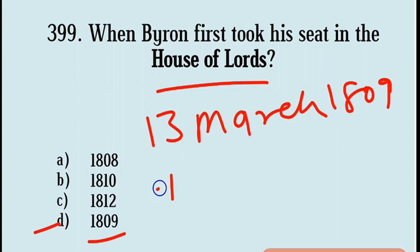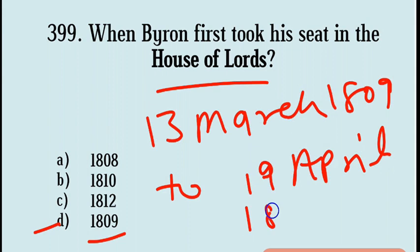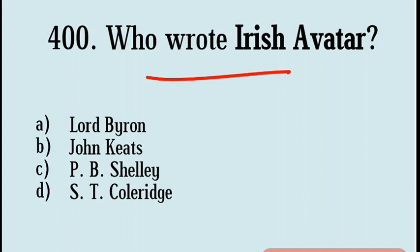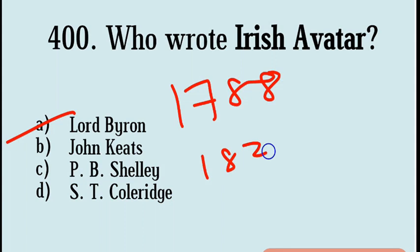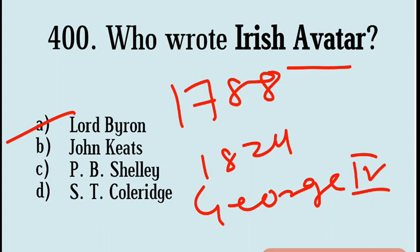Next question: Who wrote Irish Avatar? Options are Lord Byron, John Keats, P.B. Shelley, S.T. Coleridge. Correct answer: Option A, Lord Byron. Lord Byron was born in 1788 and died in 1824. Byron wrote Irish Avatar in connection with the trip of King George to Ireland.